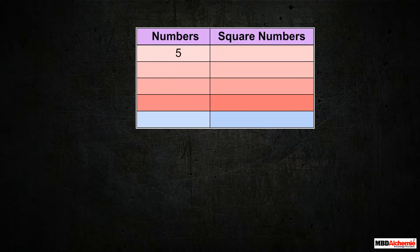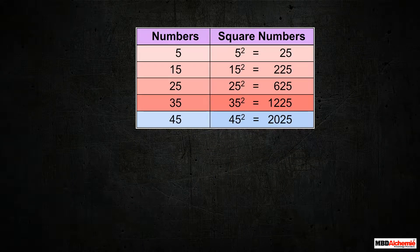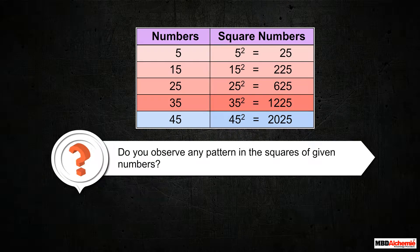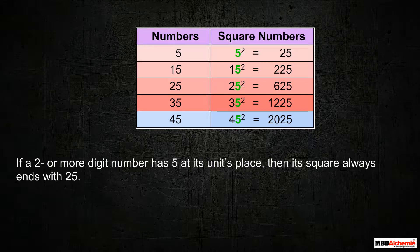Let us see the numbers having 5 at their unit's place and their squares. Do you observe any pattern in squares of given numbers? If a 2 or more digit number has 5 at its unit's place, then its square always ends with 25.